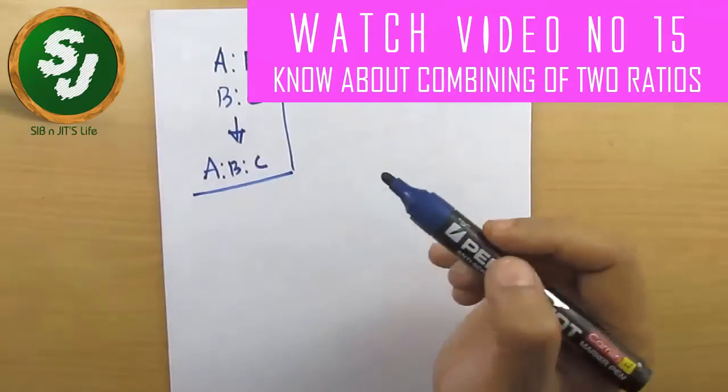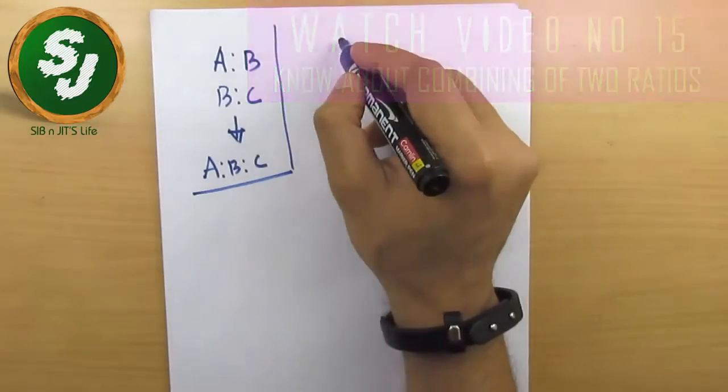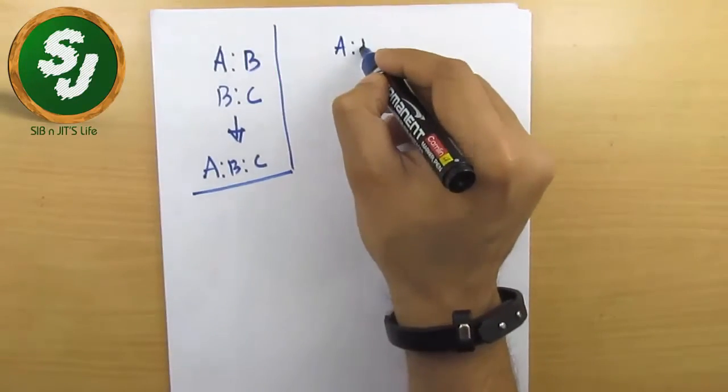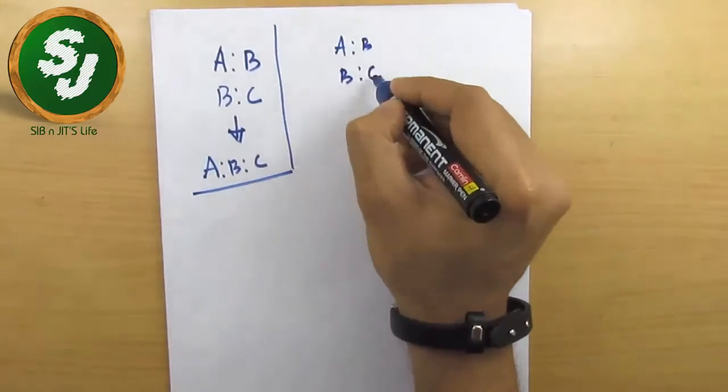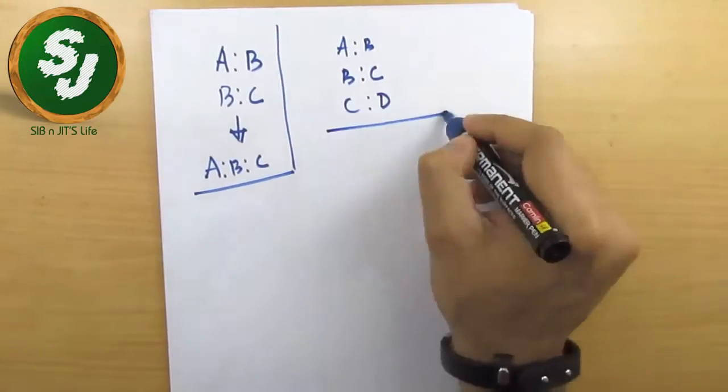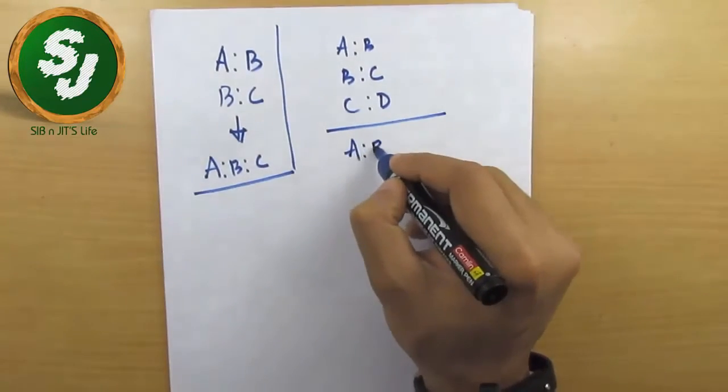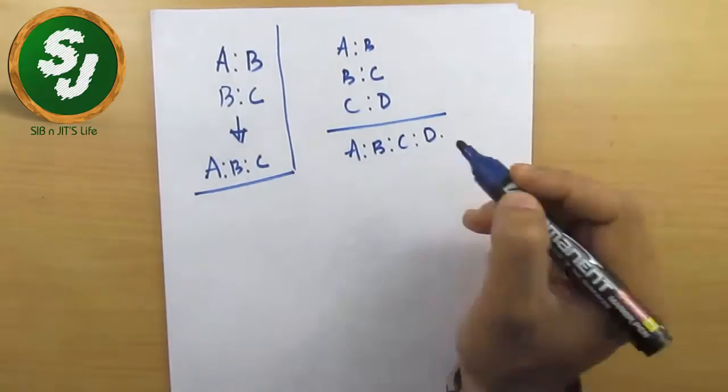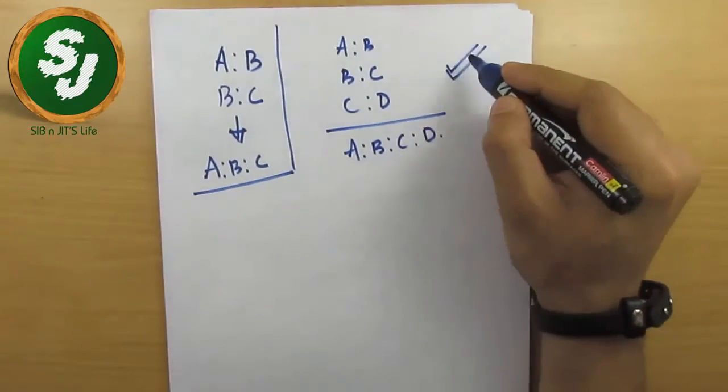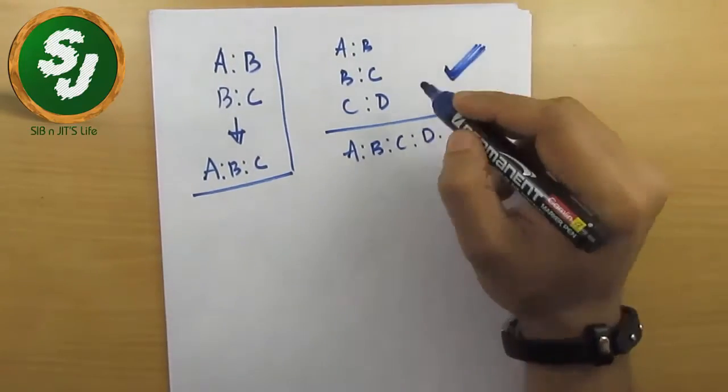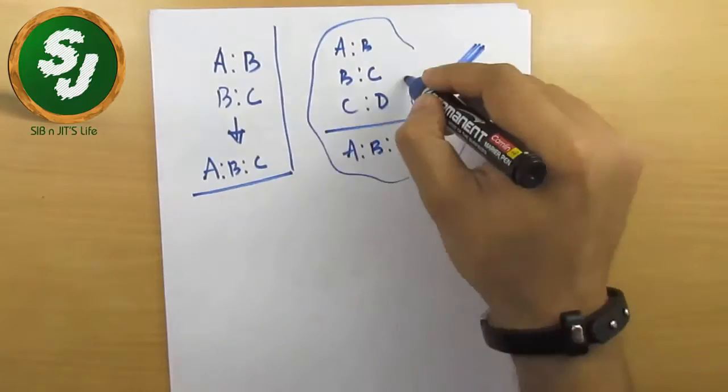In case number two, if A is to B is given, B is to C is given, and C is to D is given, we have also learned how to find A is to B is to C is to D. Now let's test this concept once again if you have a good grip on this.